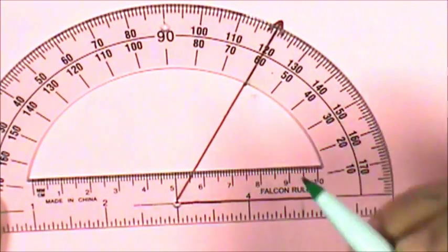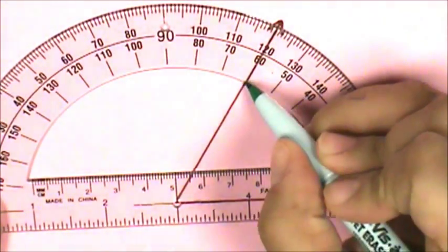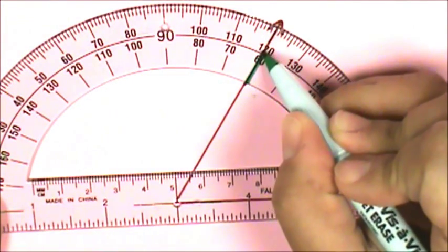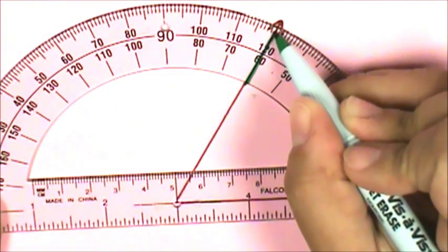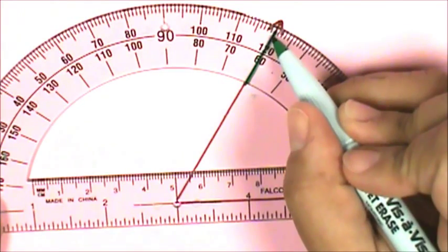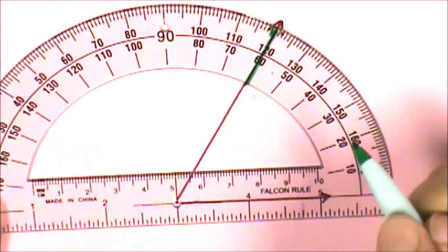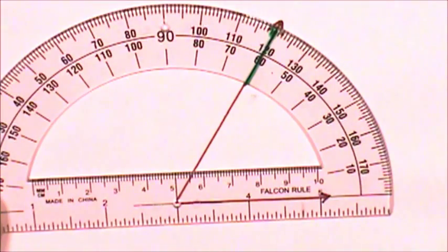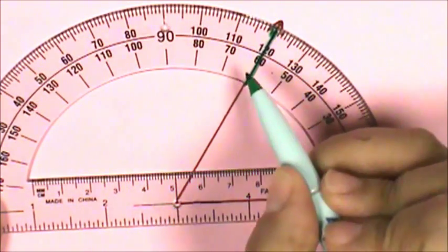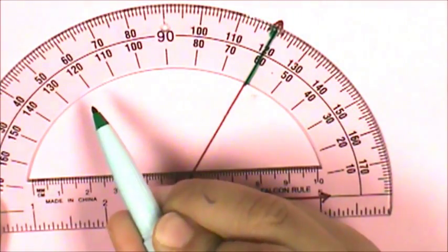If I trace the second ray of the angle, the measure is not 60. It's almost 60, but it's a little bit past 60—61 degrees, because the ray goes one tick mark past 60 and the numbers to the left are getting bigger.